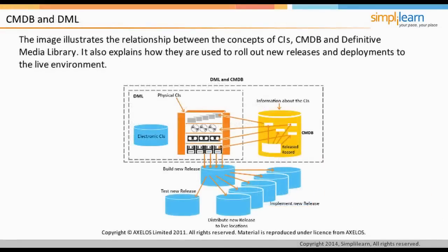The relationship between CIs, CMDB, and the definitive media library illustrates how they are used to roll out new releases and deployments to the live environment. The large rectangle represents the CMS, with the DML and CMDB as part of it. During a new release, authorized CIs are checked out of the DML and used in the development environment to create a release. The new release is tested in a test environment before being deployed to the production environment. All documentation about the release is kept in the release record and related to associated CIs in the CMDB.